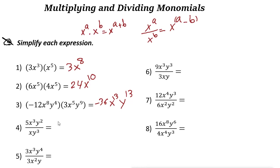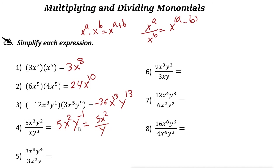For division: 5 divided by 1 is 5. X to the power of 3 over x to the power of 1 gives x to the power of 3 minus 1, which is x squared. Then y to the power of 2 minus 3 is y to the power of negative 1. You can write it as 5x squared over y by moving the y to the denominator to make the power positive.